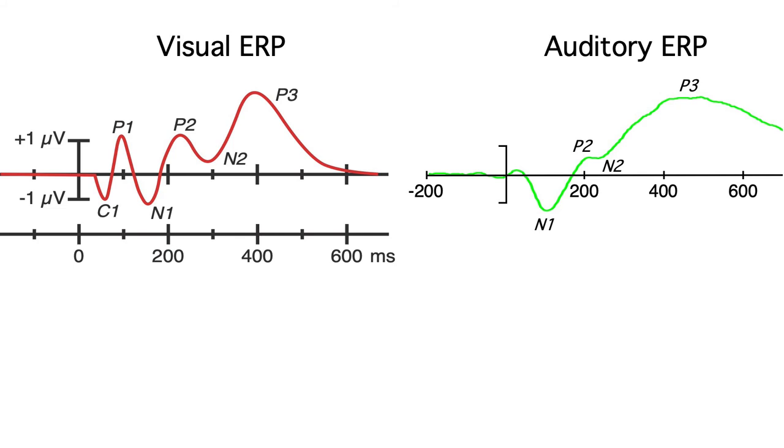You should also know that some components are modality-specific and others are modality-independent. For example, the visual N1 is completely unrelated to the auditory N1, but you get the same P3 wave for both auditory and visual stimuli.